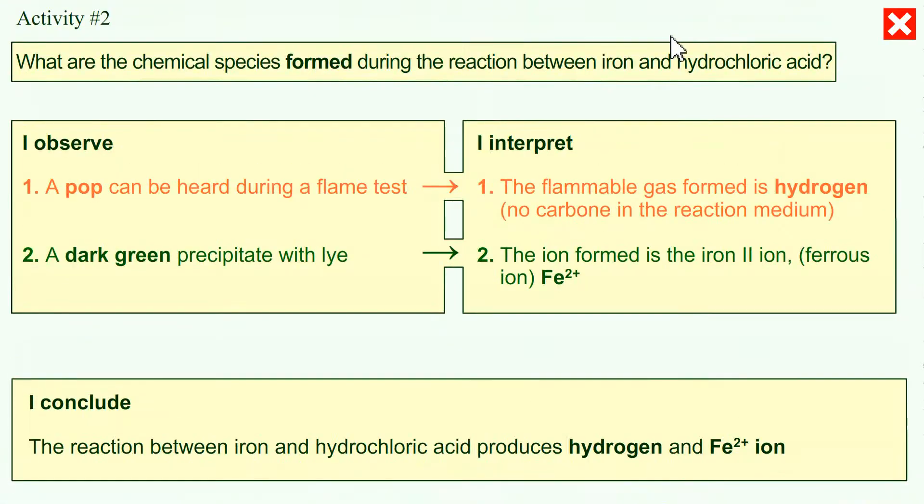So let's first look at the chemical species formed. What did we see? A gas gives pops with the flame test. It's hydrogen. If you propose methane, propane or butane, I point out that there is no carbon in the reaction medium. The precipitate is green. These are therefore iron 2 ions.